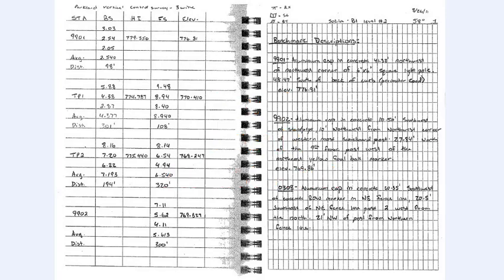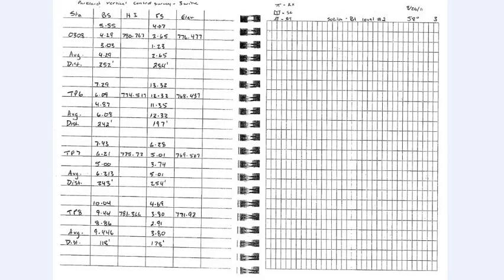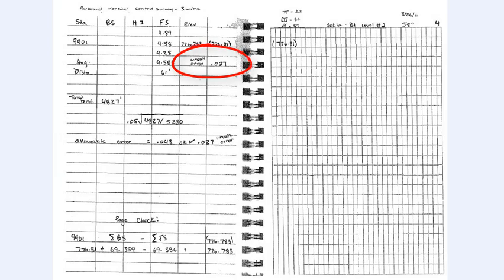These field notes are three-wire level circuit field notes and we can see the closure error at the tail end of these notes. The surveyor here has identified the circuit error as 0.027 feet. In fact this should be noted as a negative 0.027 feet. If you look carefully at the computed elevation at the ending benchmark, in this case that is benchmark 9901, the calculated elevation is 776.783. In parentheses to the right of that is the previously published elevation of that benchmark 776.81. So therefore the calculated elevation has come in below the published elevation and thus the circuit closure error is a negative 0.027 feet.